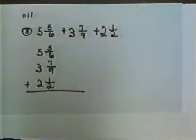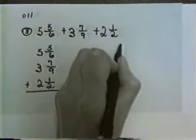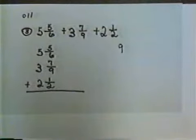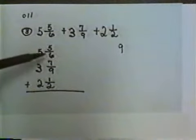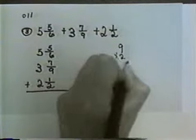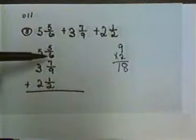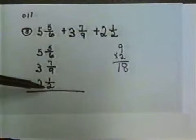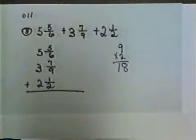Let's try another one. 5 and 5 sixths plus 3 and 7 ninths plus 2 and a half. Again, we take our biggest denominator, which is 9, and see if we can use it as our common denominator. But neither 6 nor 2 will go into 9 evenly, so we can't use 9. So let's multiply 9 by 2 and try 18. Well, 6 will go into 18 evenly, and so will 2. So 18 would be our common denominator.